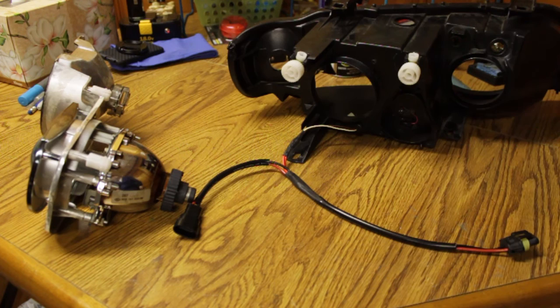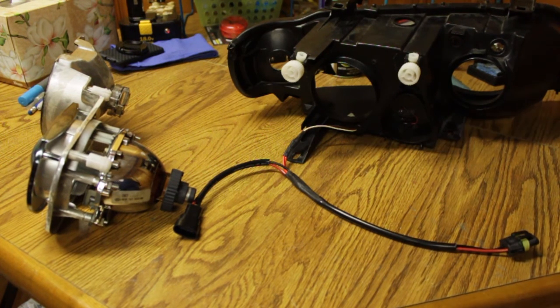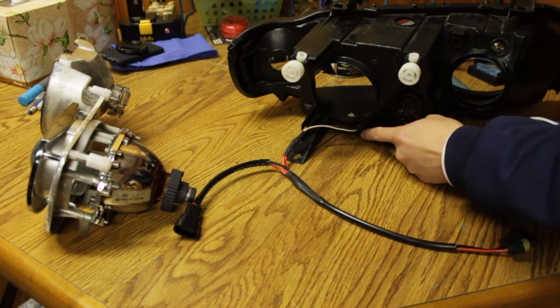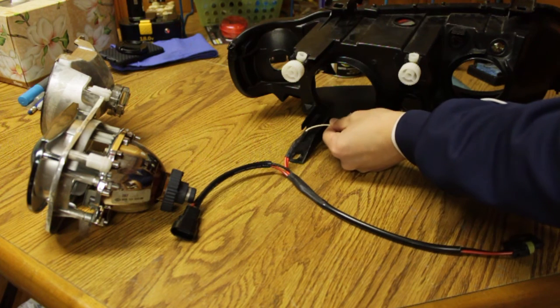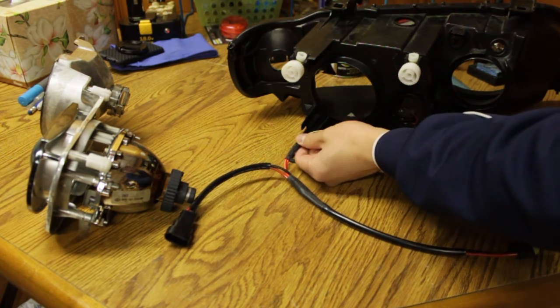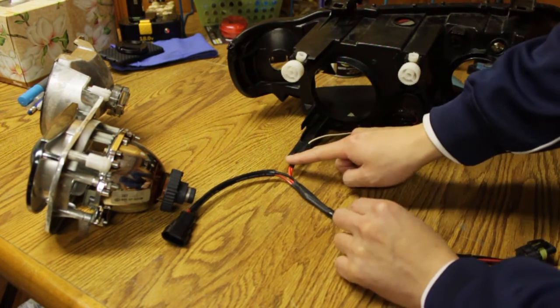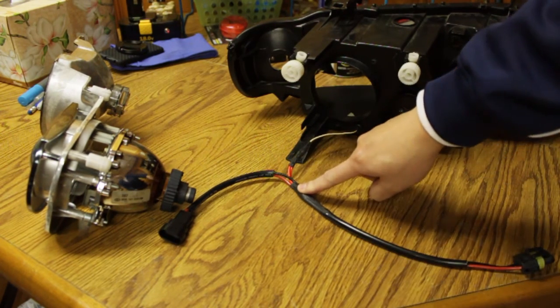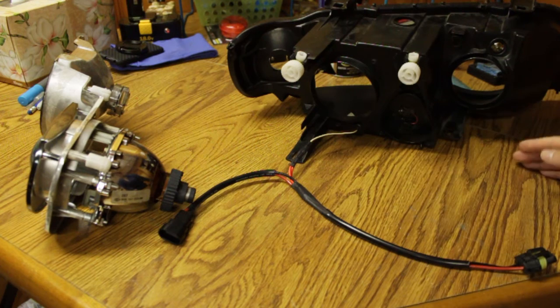What's also neat on the Spyder housing is that they give you this nice little grommet area for the high beam solenoid wires to snake through. What you want to do is splice those in with your high beam wiring and then you would get your bi-xenon output.